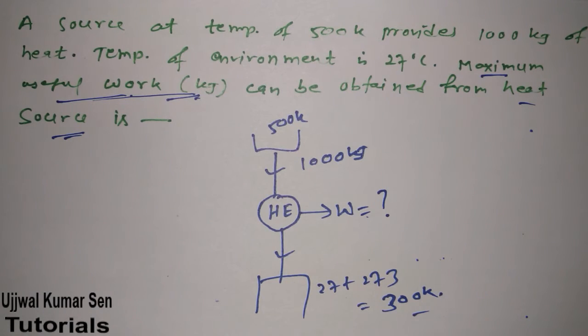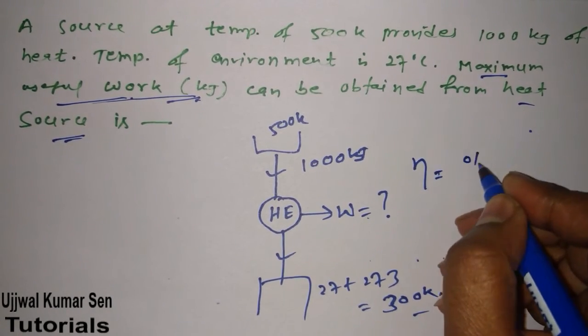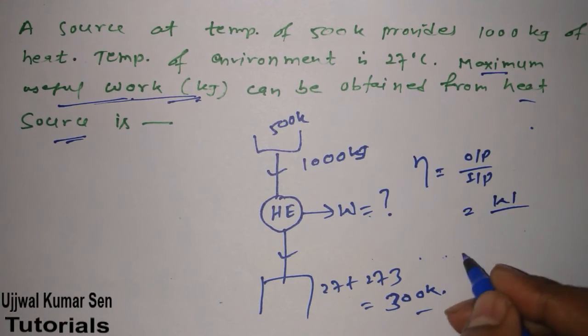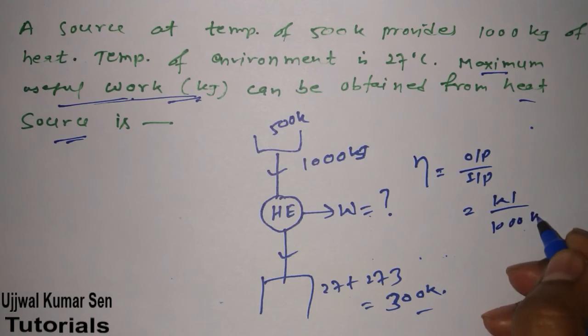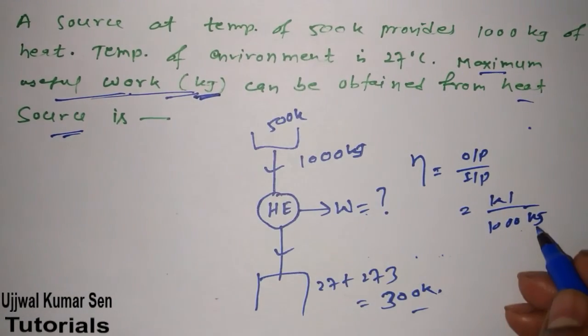We have three values, so we need to look at the relationship. We know efficiency equals output by input, so output is W, input is 1000 kilojoules. We have to find the answer in kilojoules, so we don't need to convert.